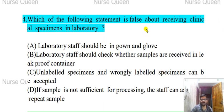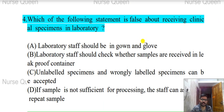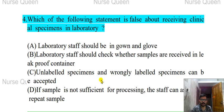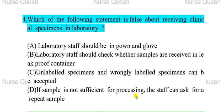Next question: which of the following statements is false about receiving clinical specimens in the laboratory? Laboratory staff should be in gown and gloves — that is correct. Laboratory staff should check whether samples are received in leak-proof containers — correct. Unlabeled specimens and wrongly labeled specimens can be accepted — that is false. If a sample is not sufficient for processing, staff can ask for a repeat sample — that is correct.